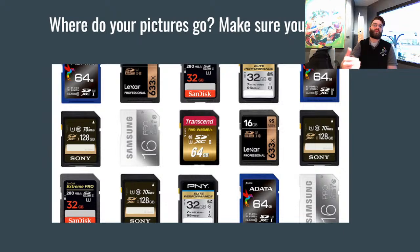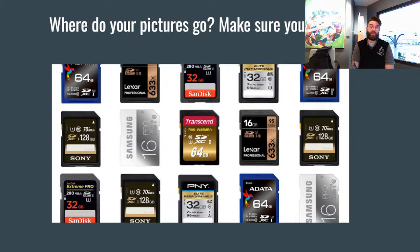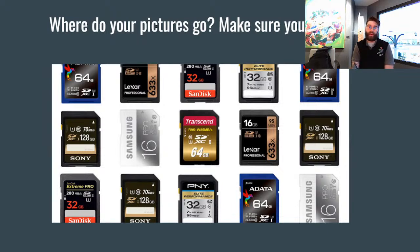The next thing we'll talk about before we really get into the camera is: where do your pictures go? When you're taking photos, no camera that you purchase now — except for some action cameras like GoPros or DJI — has any type of internal storage. When I say internal storage, I mean what is available for you to save your physical photos to the camera. There's nothing inside the camera. You, as a consumer, as a photographer, need to choose what kind of storage solution you want.